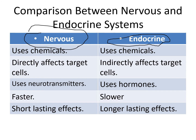In the nervous system, these chemicals directly affect target cells. If a tissue is innervated, that target tissue will be affected by the nervous system. On the other hand, the endocrine system indirectly affects target cells. It's more global because wherever the bloodstream can reach, hormones can in theory have an effect. So the major difference is that the nervous system is directly affecting and the endocrine system is indirectly affecting.